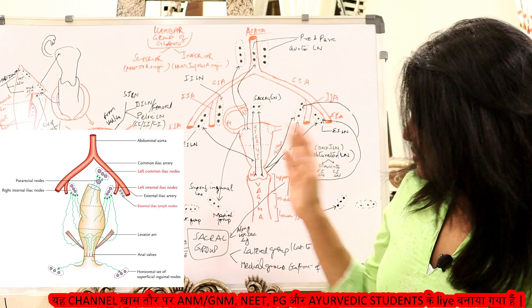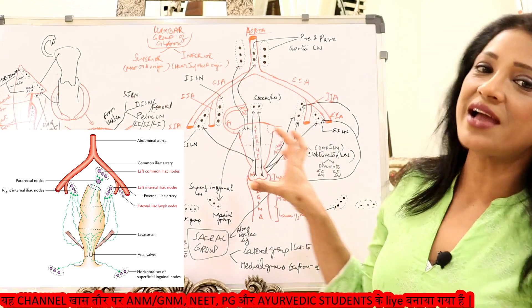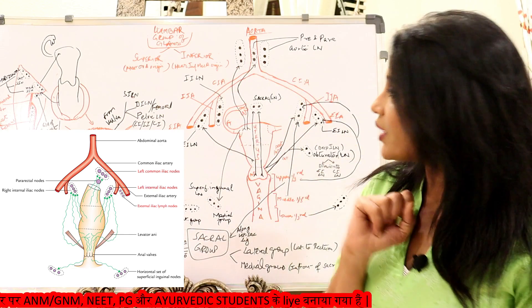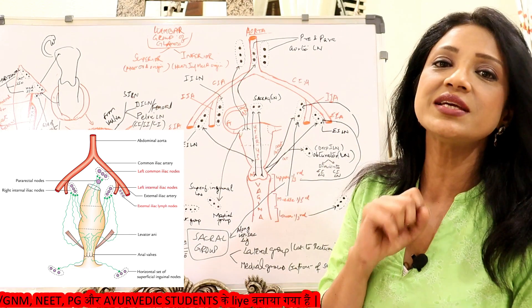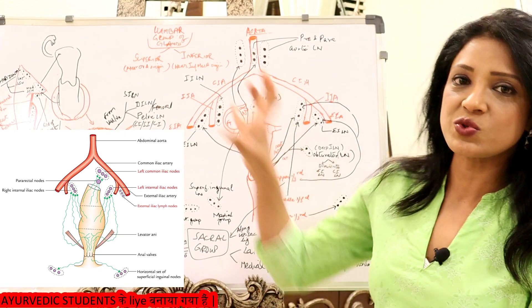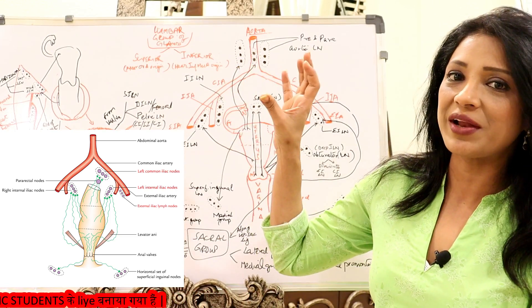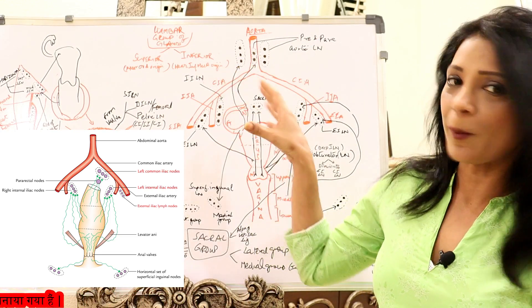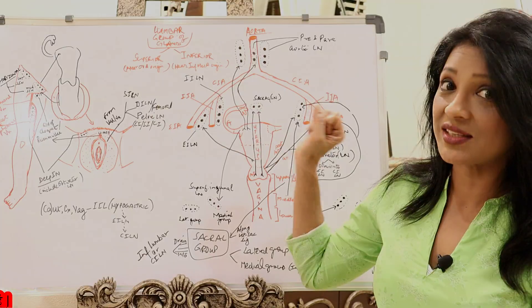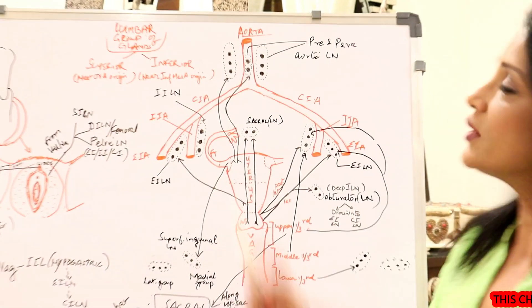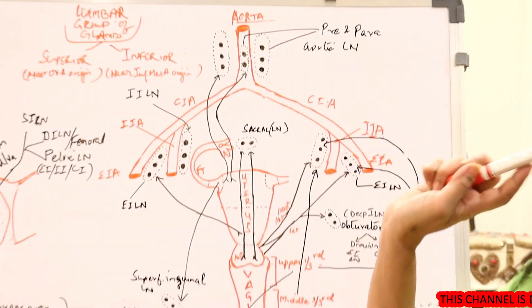As you can see, it's a very busy diagram, a very busy board. What I tried to do is summarize all the lymphatic supply in a nutshell so that it's not as complicated as it looks. So first, let's start with this diagram.